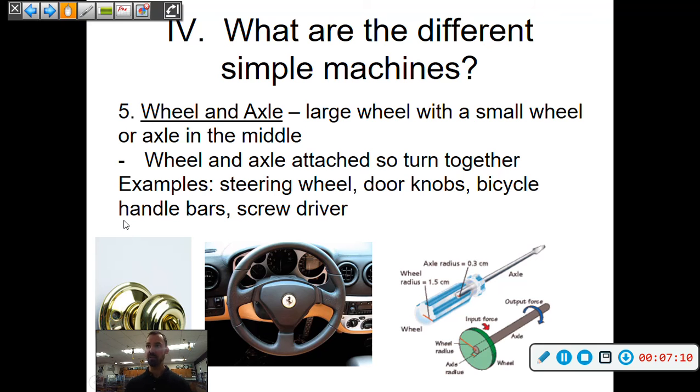Wheels and axles, used a lot in our lives. So a large wheel with a small wheel or an axle in the middle. So when a wheel and axle is attached, so they turn together basically, so like a steering wheel is attached to the shaft which then turns the car wheels.